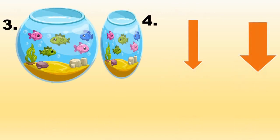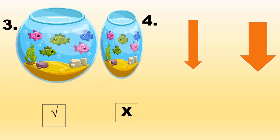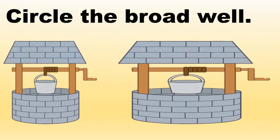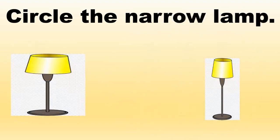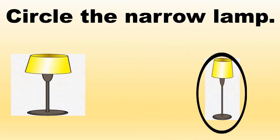In the third example, tick for broad and cross for narrow. In the fourth example, tick for broad and cross for narrow. Here in front of you there are two wells — circle the broad well. Yes, very good. And here you have to circle the narrow land. Yes, very good.